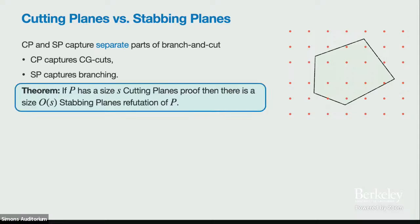That was stabbing planes. Cutting planes and stabbing planes capture different parts of branch-and-cut algorithms: cutting planes captures the cutting, while stabbing planes captures the branching. You might think they're different. However, from the perspective of proof complexity, it's not too difficult to see that cutting planes are actually kind of superfluous — you can turn any cutting planes proof of size S into a stabbing planes proof of roughly the same size.